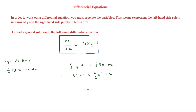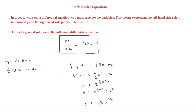We can now work out y by using logarithmic rules. We know that to get rid of the ln we raise e to the power of 5 over 2 x squared plus c. Using rules of indices we can say y is equal to e to the power of 5 over 2 x squared times e to the c. We can express e to the c as just a, so our final answer is y equals a e to the 5 over 2 x squared.